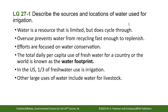Water is a limited resource that does cycle through, but there is a finite amount and we use it like there isn't. Overuse of water means it may not be recycled fast enough to replenish, so efforts are focused on water conservation. The total daily per capita use of fresh water for a country is known as the water footprint. In the US, one-third of fresh water is used for irrigation. Other large uses of water include livestock — not just growing crops, but also watering cattle, pigs, and chickens.